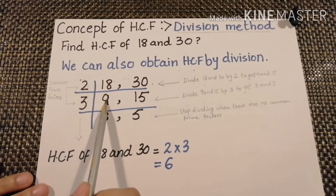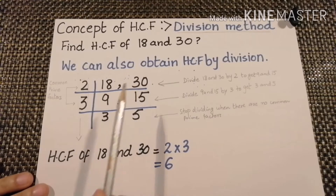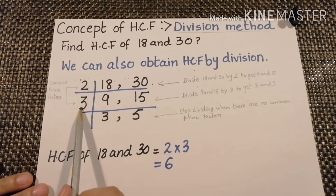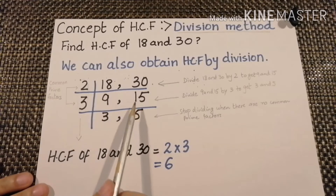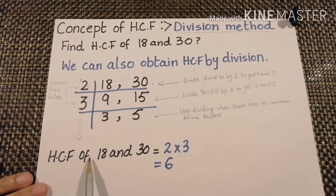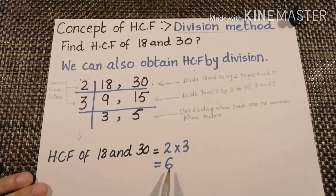2 times 9 is 18 and 2 times 15 is 30. Now again we will divide both numbers by the same common prime factor, which is 3. 3 times 3 is 9, 3 times 5 is 15. Now we will stop dividing because there is no common prime factor. The HCF of 18 and 30 will be the product of both common prime factors: 2 multiplied by 3, which gives us 6. This method is called the division method.